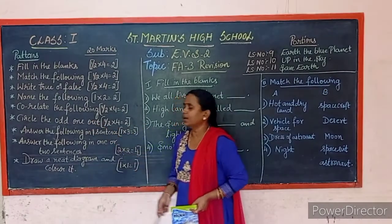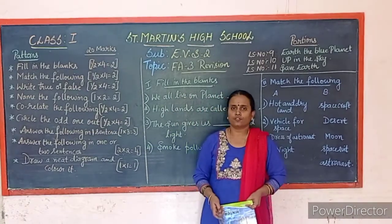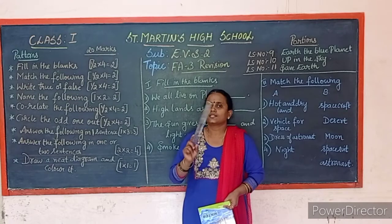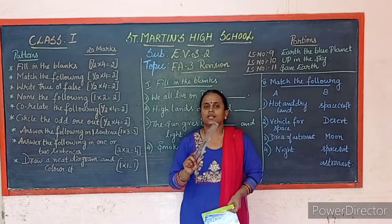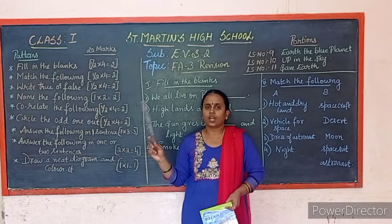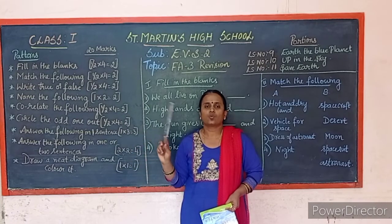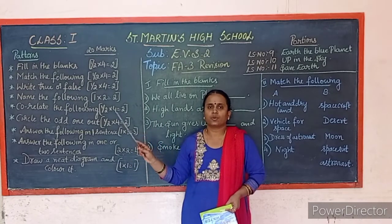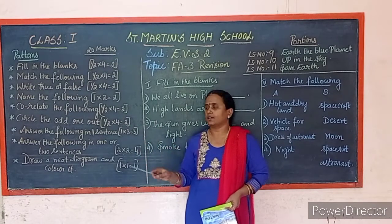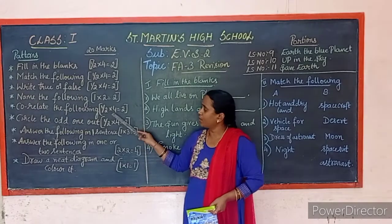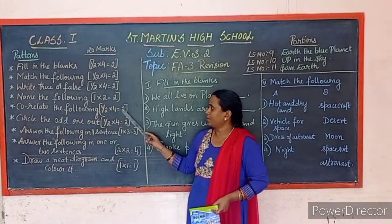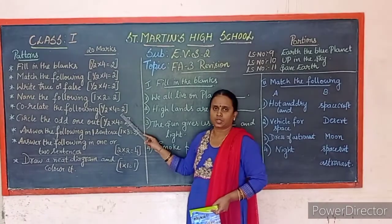Correlate the following: you will be given one example — for instance, 'Sun: you can see the sun in the day; Moon: ___' and the answer is night. There will be 4 questions, and the total marks will be 2.